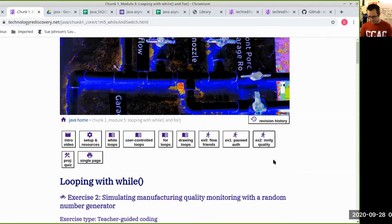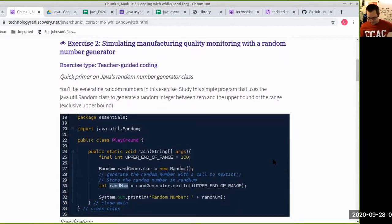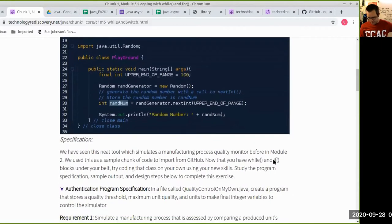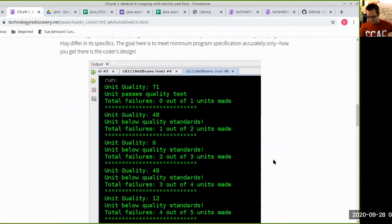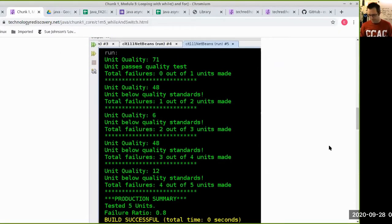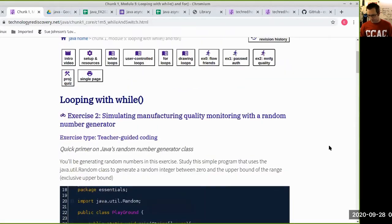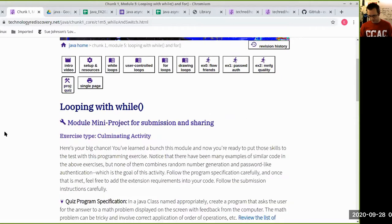And then exercise two gets a chance to build in the random number generator to simulate a production quality system. And so this is a higher level project that might even turn into your final project. Simulation is a whole field of programming that has incredible application across industries because it's a lot cheaper to write a program to simulate how a system works than to build a test system that's not very good in having to tear it down and build it up again. So your mini project here for manufacturing quality is fantastic.